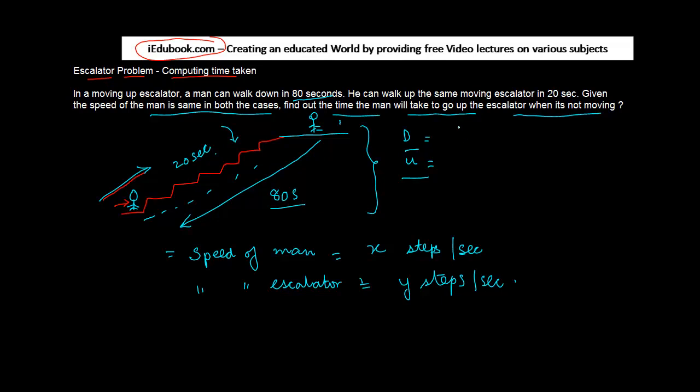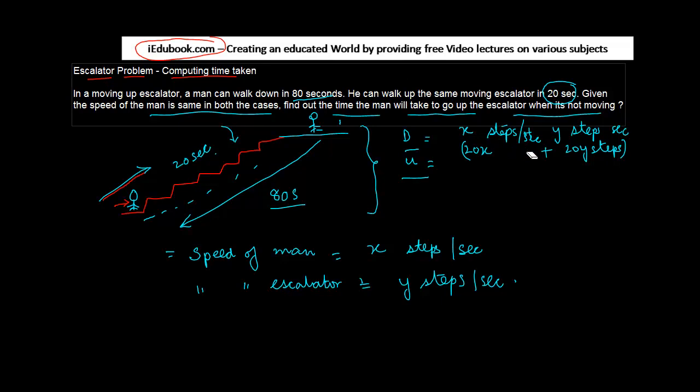Then when he is going up, what is the downstream speed? That is equal to x steps plus y steps. And we are told it takes 20 seconds. So in one second he moves x steps, so in 20 seconds he will move 20x steps. And here it will be 20y steps.